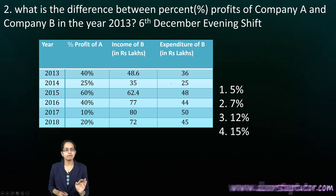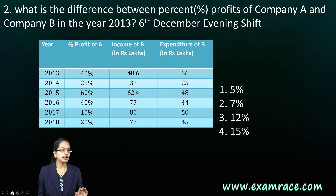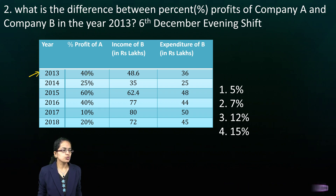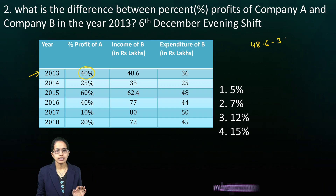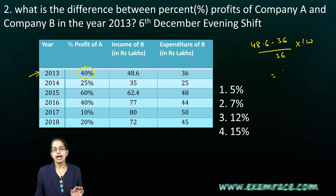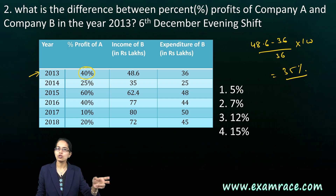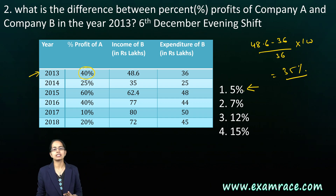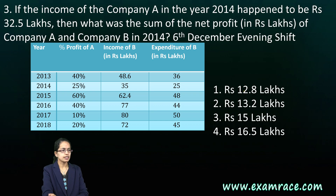The next question asks: what is the difference between the percentage of profit of company A and B for 2013? For 2013, we already know the profit percentage for A. For B, it is (48.6 minus 36) divided by 36 into 100, which comes out to around 35%. The difference between 40% and 35% gives 5% — a very direct and simple question.